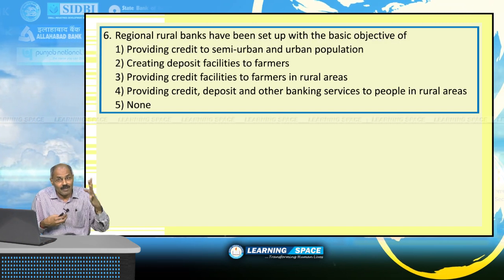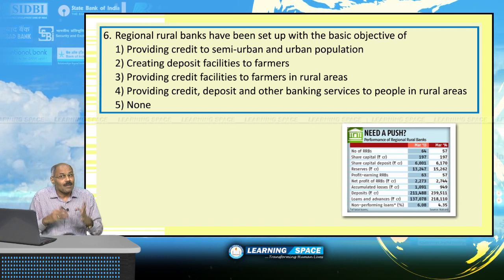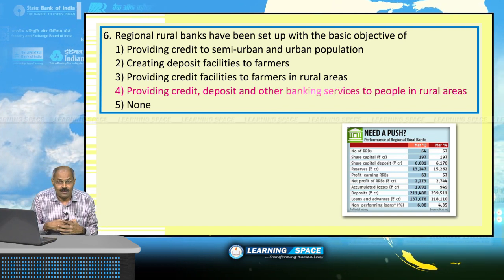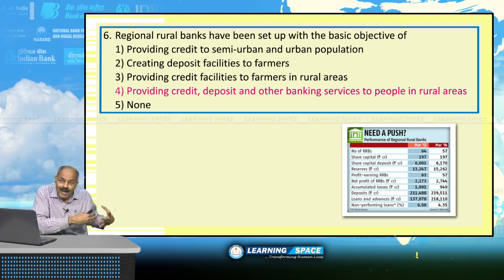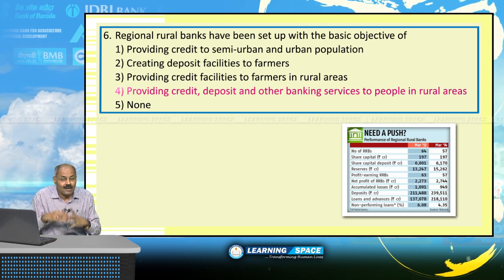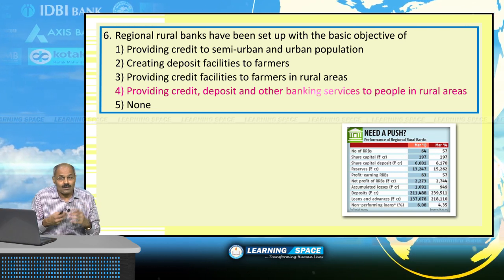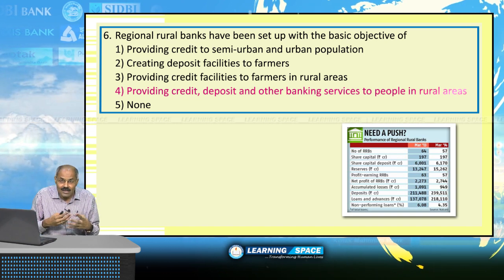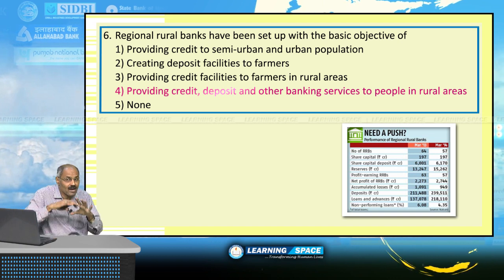Regional Rural Banks were set up with the basic objective of providing credit, deposit, and other banking services to people in rural areas. They started on October 2, 1975. Whatever services are given by commercial banks are also to be given for rural masses. The number of RRBs is coming down because of mergers and amalgamations, as the government believes amalgamation of smaller banks is the way to achieve profitability.